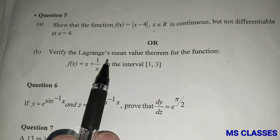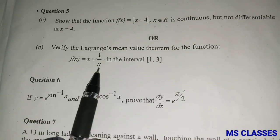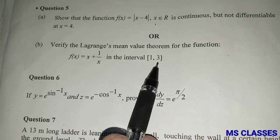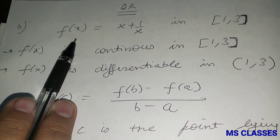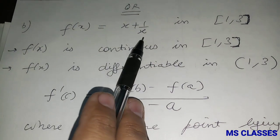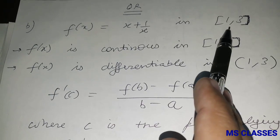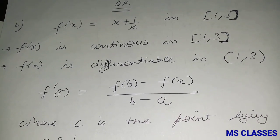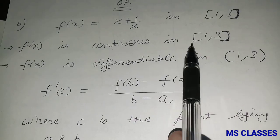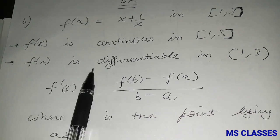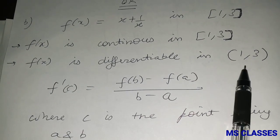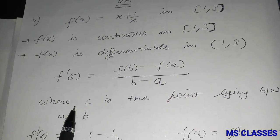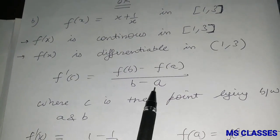Next: verify the Lagrange Mean Value Theorem for f(x) = x + 1/x on the closed interval [1, 3]. The function is continuous on the closed interval and differentiable on the open interval, so there must exist a point c lying between 1 and 3 which satisfies the LMVT condition.